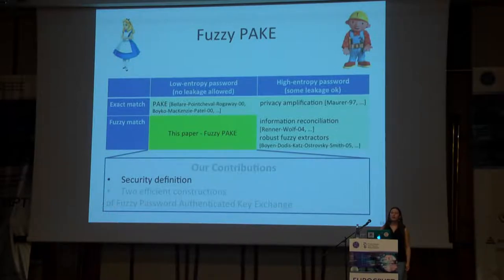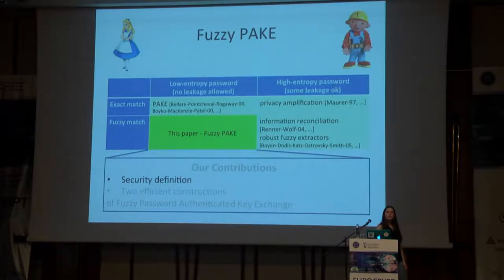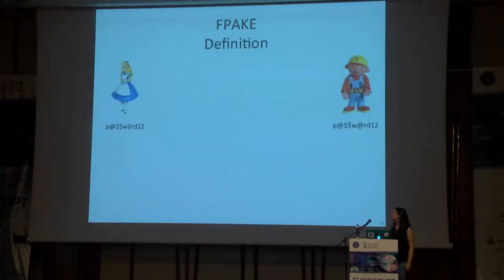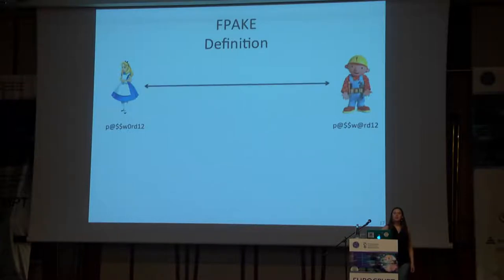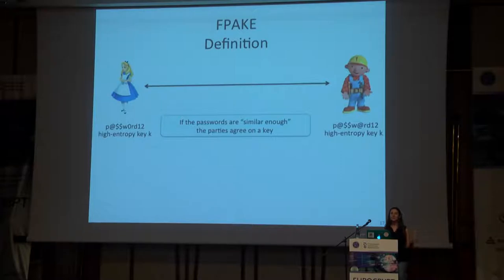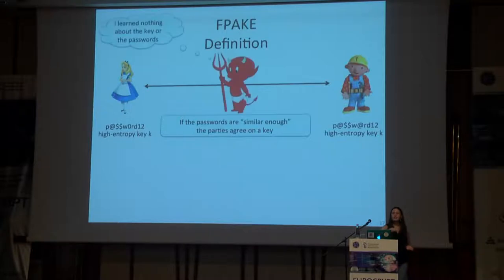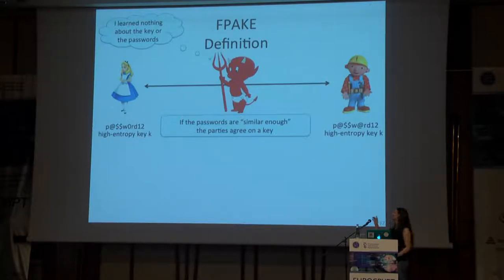I want to talk a bit more about our security definition of Fuzzy PAKE. If Alice and Bob share two passwords that are actually close, they want to be able to talk to one another and, as a result of this conversation, both hold the same high-entropy session key K. Any active or passive man in the middle should learn nothing at all about the passwords or the key, as long as that man in the middle doesn't already know some password that's close enough.